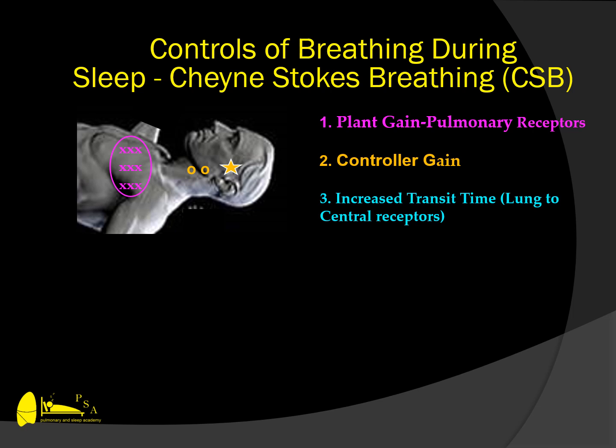With reduced ejection fraction, the time from the blood leaving the heart until reaching the medulla will be increased. This increased transit time may be prolonged from 10 seconds in a normal patient to 25 or 30 seconds in a patient with congestive heart failure. This prolonged transit time means the signal will be late, confusing the respiratory center and further destabilizing respiratory drive, leading to an inconsistent pattern of signal to the lung and respiratory muscles.